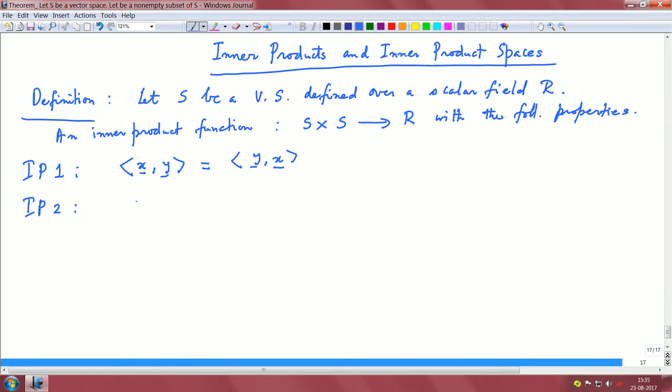We have the second property. Suppose I scale one of the vectors by alpha. The inner product of alpha x with y is basically alpha times the inner product of x and y. And of course, alpha is a real number belonging to R.